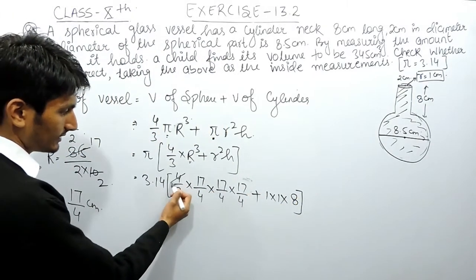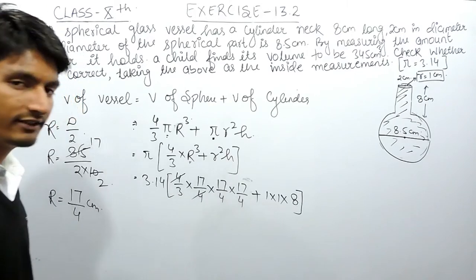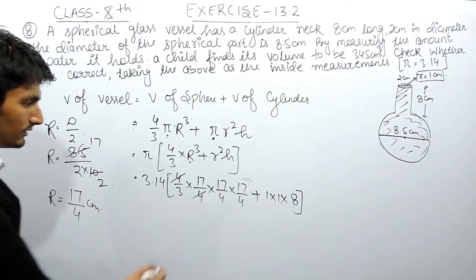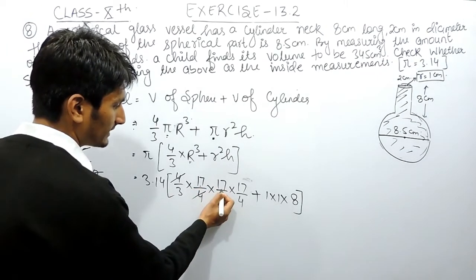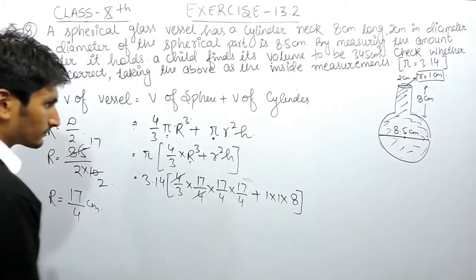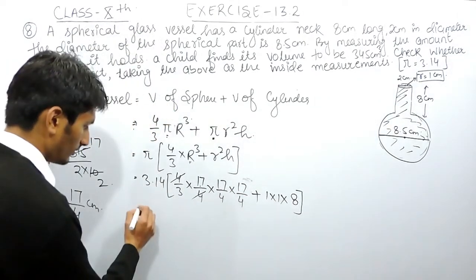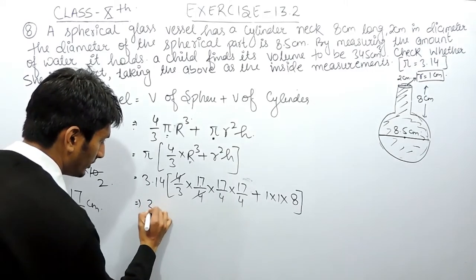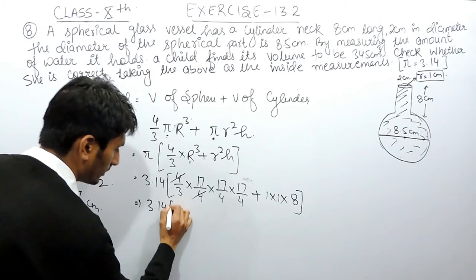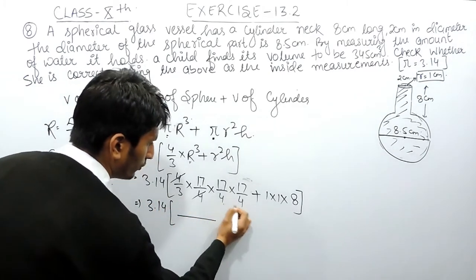Now we can cancel this. This can be canceled with this. This will be 17 multiplied by 17 multiplied by 17. This will be 3.14 and this will be 4 times 4 is 16 times 3 is 48.